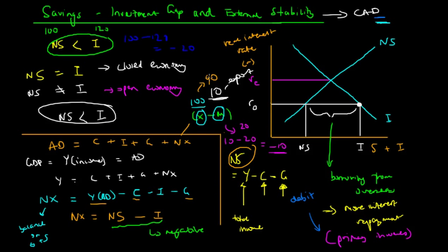In summary, when there is a savings-investment gap in Australia, it means a movement away from external stability for two reasons. First, because we're borrowing from overseas, we require more interest repayments recorded in the primary incomes account as a net debit of the current account. Second, because national savings is less than investment, we are importing more than we are exporting, creating a debit in the balance on goods and services. Both factors increase the current account deficit — an indicator of moving away from external stability, which the government targets at around 3–4% of GDP.